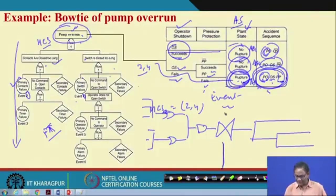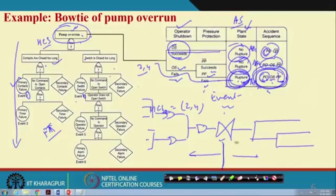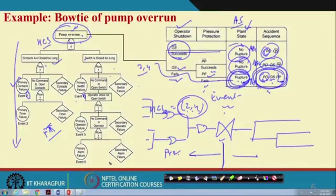The top event sits at the center: one side shows why the event occurs, and the other side shows what happens if that event occurs. If we want to prevent pump over-run, the cut sets on the fault tree side — for example, primary contact failure and primary switch failure — should not simultaneously occur. You put a prevention measure so they do not simultaneously occur. The preventive measures can also fail, so there is a probability of pump over-run opening, and then protection systems must work so rupture does not happen.